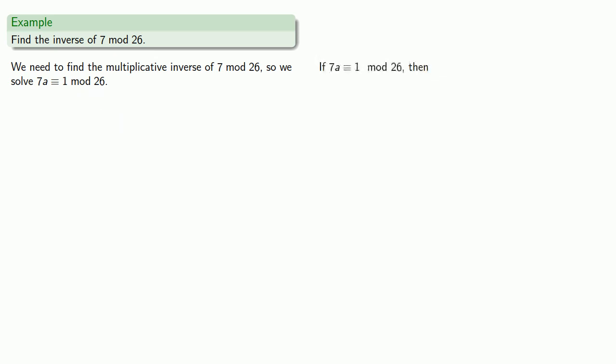If 7a is congruent to 1 mod 26, then we know that 7a is 1 more than a multiple of 26. So we'll use our Diophantine method of solving this and get a equal to 3b plus (5b plus 1) divided by 7.